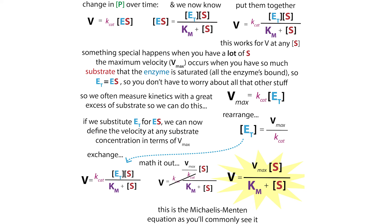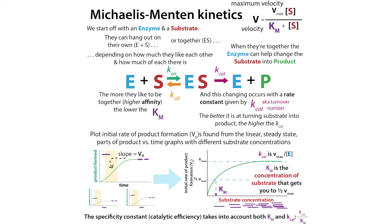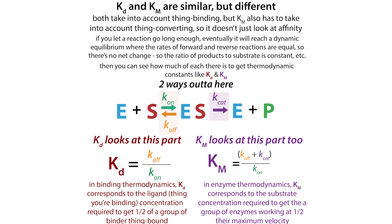One of the key concepts from the Michaelis-Menten equations is that the Km — the Michaelis constant — which we're talking about in terms of that affinity for the substrate, is mainly the affinity. There are some other complicating factors, but you can think of it as the affinity for a substrate.